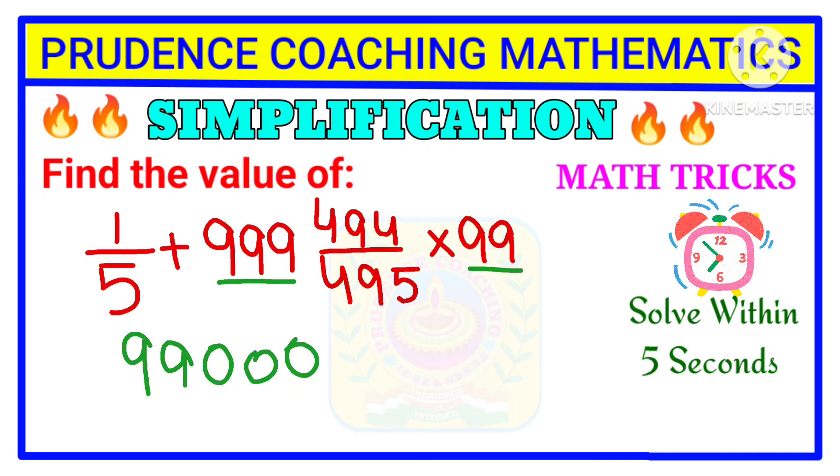Here 999 multiplied by 494 divided by 495, multiplied by 5. And this 5 we have in plus over here, 1 divided by 5. So here we are getting 5.